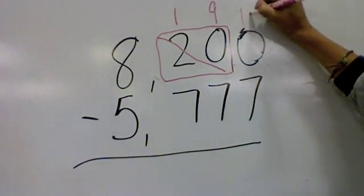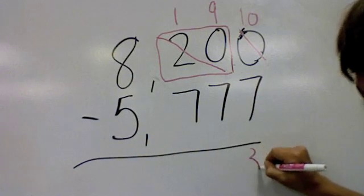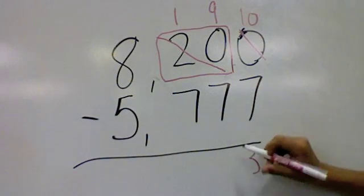Now give your ten to the ones column. So ten minus seven is three. Nine minus seven is two.